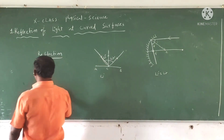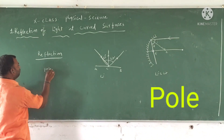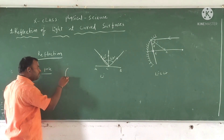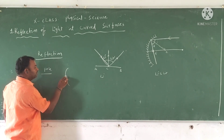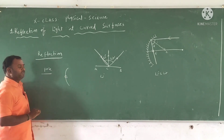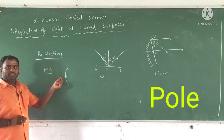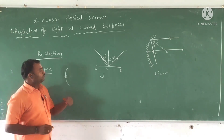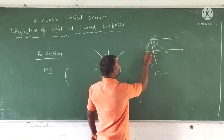So what is meant by pole? Pole means the midpoint of the mirror. This is the mirror — the midpoint of the mirror is called pole. So this is the pole.